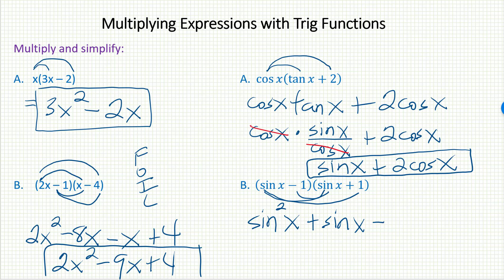Outer looks like plus sine x. Inner, minus 1 times sine x would be minus sine x. And then last, negative 1 times positive 1 is minus 1. Once again, those middle terms are like terms. This one works out particularly nice because they just wipe out. Sine x minus sine x is gone. That leaves me with sine squared x minus 1.